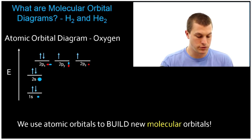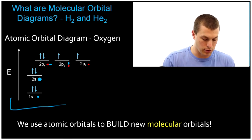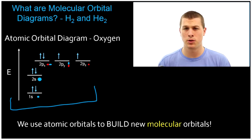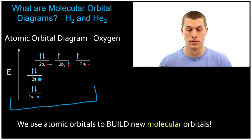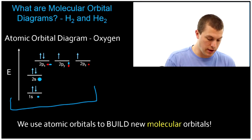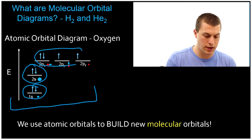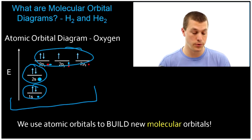You might remember what I have drawn down here, which is an atomic orbital diagram. Atomic orbital diagrams tell us how the electrons are smeared out around an atom. This says we have two electrons in the 1s orbital, two electrons in the 2s orbital, and four total electrons in p orbitals, of which there are three.